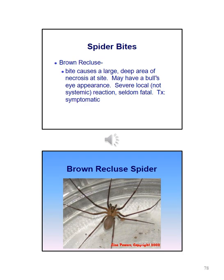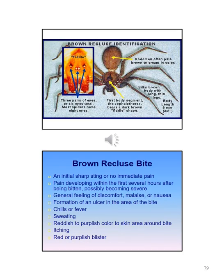A brown recluse spider bite causes a large deep area of necrosis at the site and may have a bull's-eye appearance. There may be a severe local reaction; it is seldom fatal and treatment is symptomatic. The bite may have an initial sharp sting or no immediate pain; pain may develop within the first several hours and possibly become severe. Signs and symptoms include general discomfort, malaise or nausea, formation of an ulcer in the area of the bite, chills or fever, sweating, and a reddish to purplish color to the skin around the bite, with itching or a red or purplish blister.